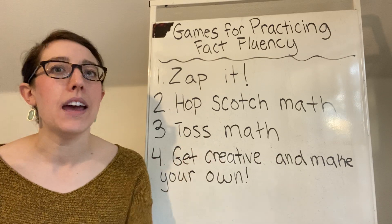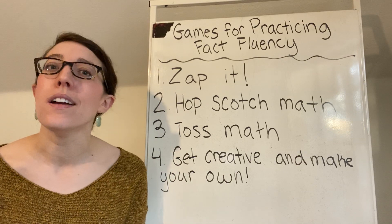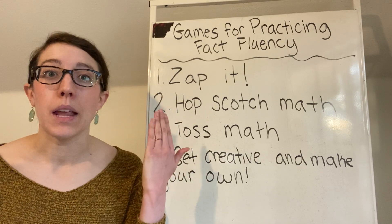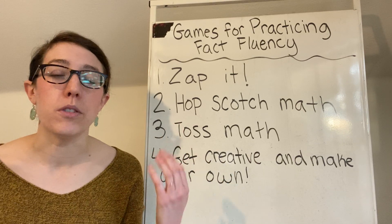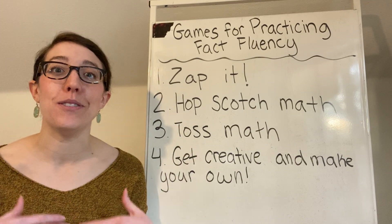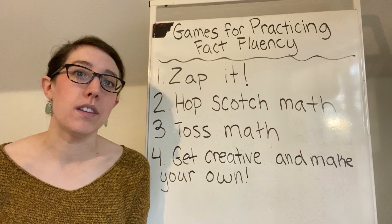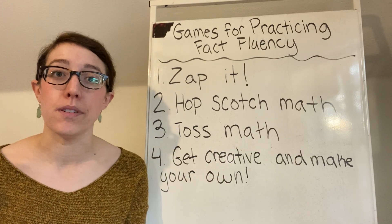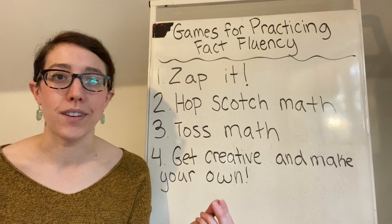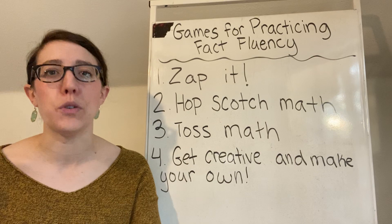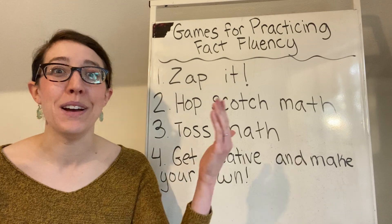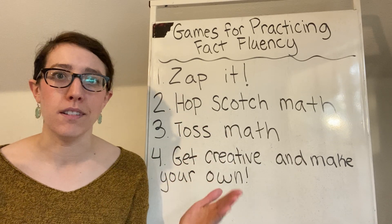Whatever number they're standing on, you start with that number. So let's say they're on a nine — keep going, stop the music again, and let's say they land on a four. Your child would have to add nine plus four. They can do that mentally or solve it on the driveway with chalk. If you're working on subtraction fact fluency, you as the adult would pick a number in the teens, like 15, and have your child hopscotch until you stop the music. Whatever number they land on, they subtract it from 15 — so if they land on seven, they do 15 minus seven.